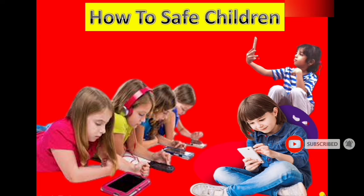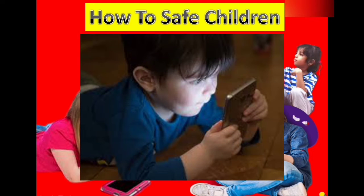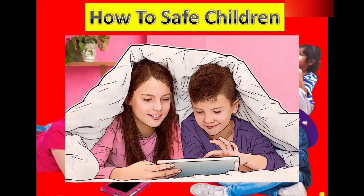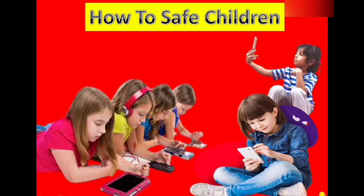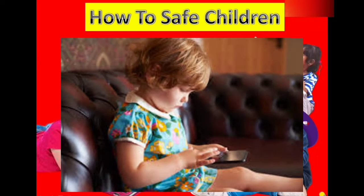Here we share what you can do. Number one: talk to your children about online safety. Number two: agree on boundaries. Number three: choose age-appropriate apps and websites. Number four: set privacy settings together.